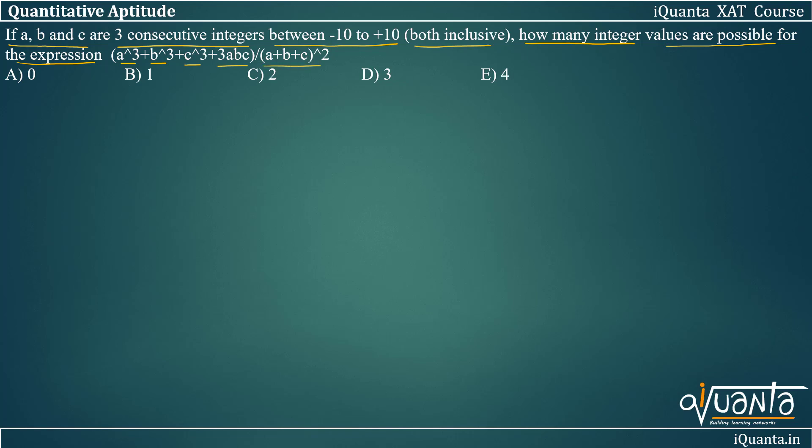So A, B, C are three consecutive integers between -10 to +10. Many students will directly go with the hit and trial method. But after a few hit and trials, you will come to know that you've wasted a lot of time. So in such a question, you should always go by the generalization method.